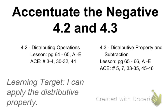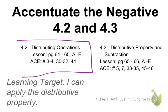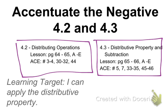All right, ladies and gentlemen, today is Accentuate the Negative, 4.2 and 4.3. This is a two-part problem. We have Distributing Operations, 4.2, and then the Distributive Property and Subtraction, 4.3. Do one, then do the other, but give yourself two days to complete it. They basically cover a whole lot of the same thing, which is why I've combined them.